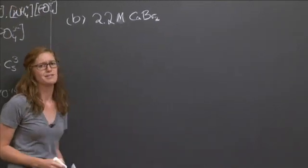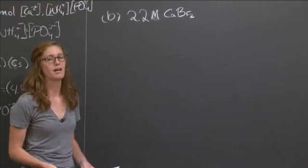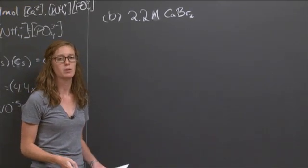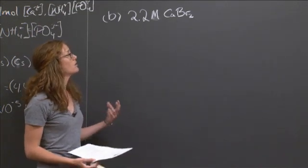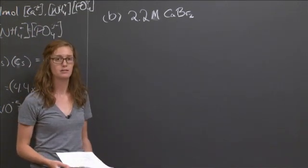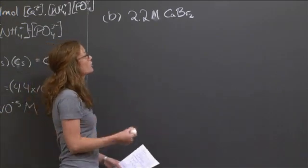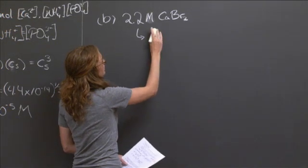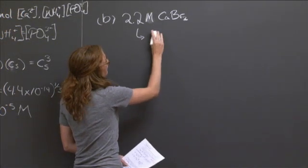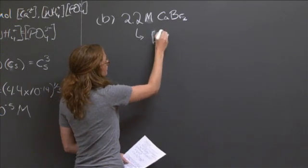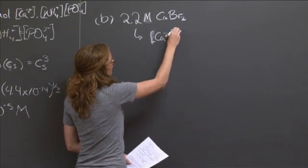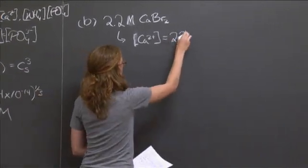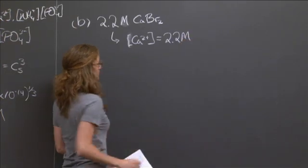Now we have to ask ourselves, why would the fact that we have a concentration of calcium bromide affect the solubility of calcium ammonium phosphate? And the thing to remember here is the common ion effect. 2 molar calcium bromide will, when dissolved in water, the concentration of calcium from just the calcium bromide will be 2.2 molar.